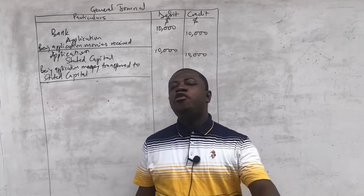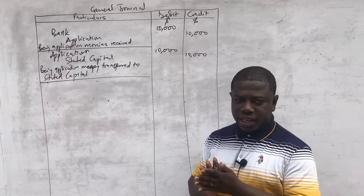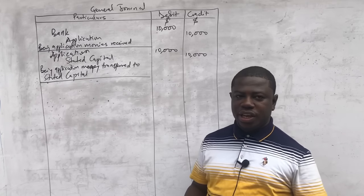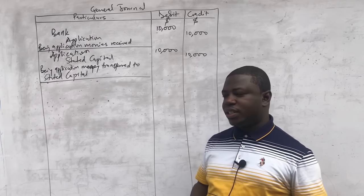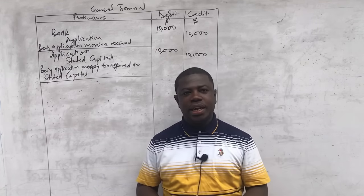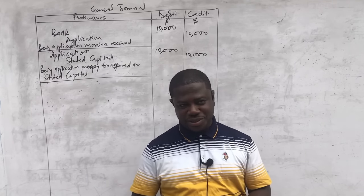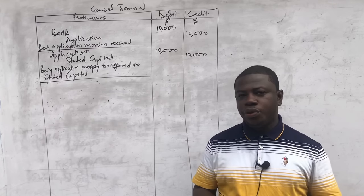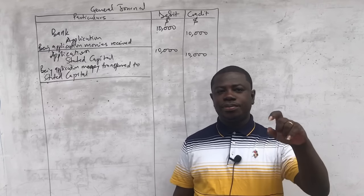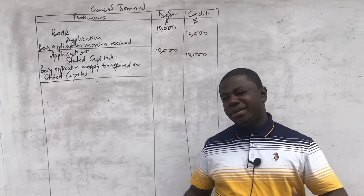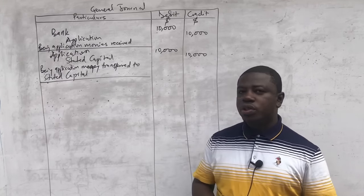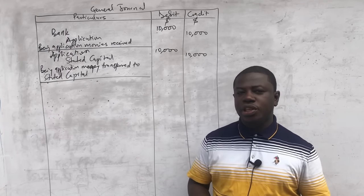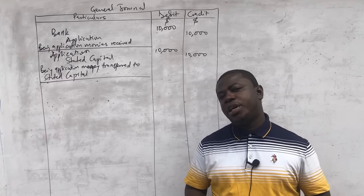For every double entry you do, you can record a journal entry for it. If the question has not required journal entries, don't waste time on them. Some questions may only require journal entries and not the ledger accounts — you have to be smart about that. The double entry is the same as what you transfer into the journal. This is part one of our video on the issue of shares. In part two, we will talk about over-subscription, forfeiture of shares, reissue of forfeited shares, and the share deals account. Remember to subscribe to this channel and share this video — bye for now.